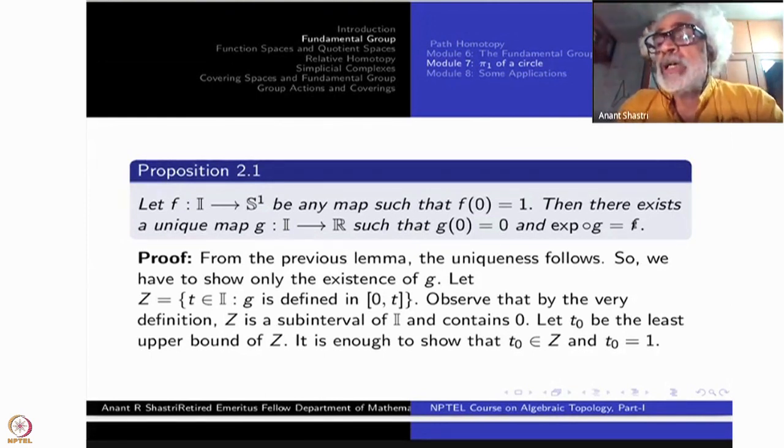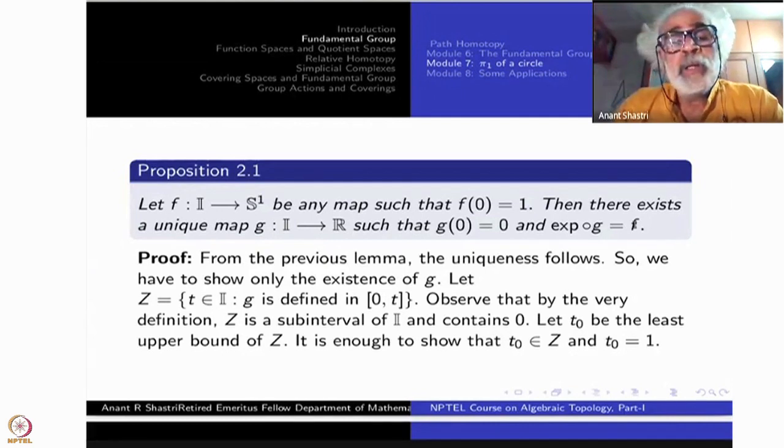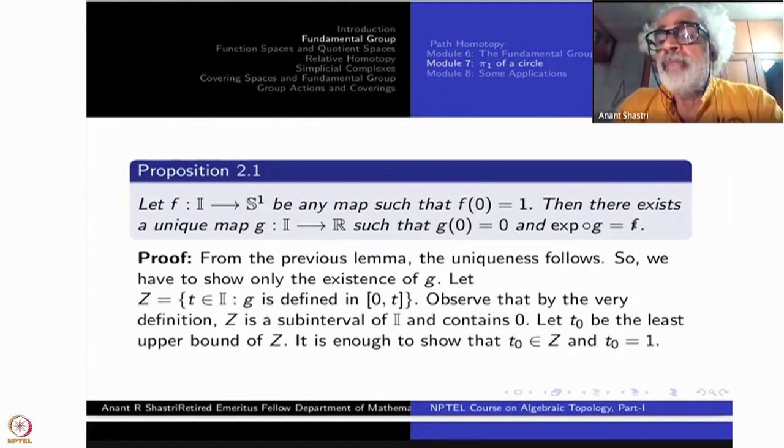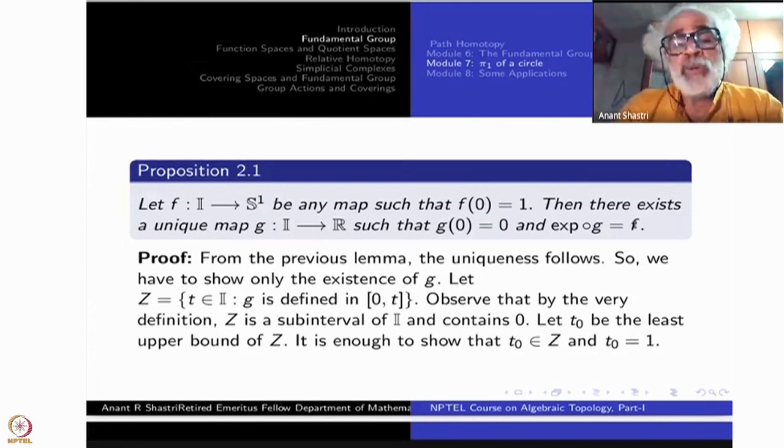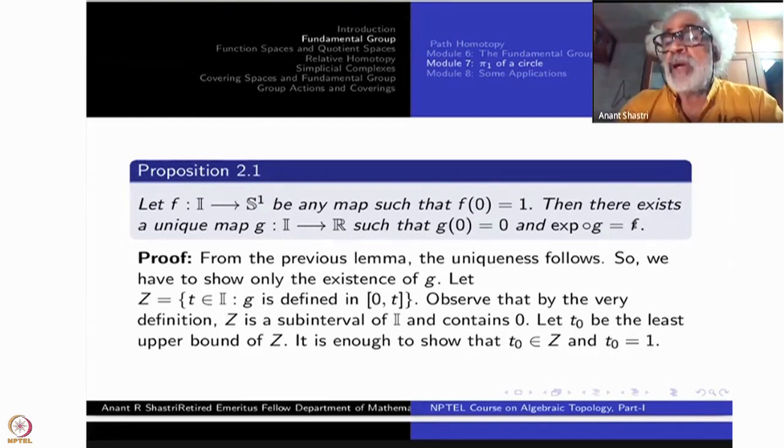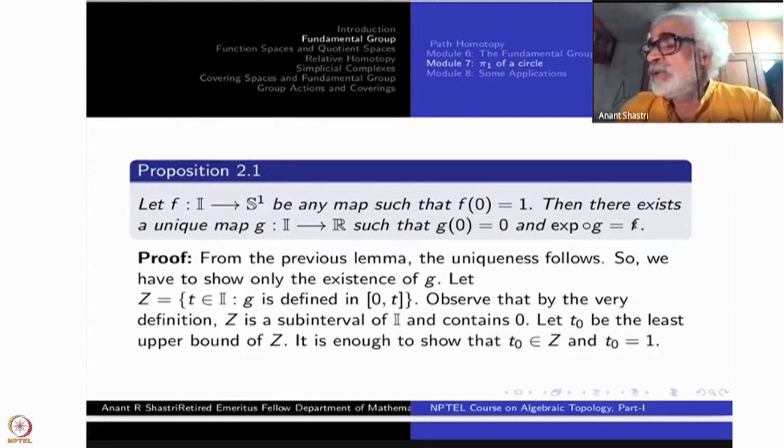Therefore, along with this proposition, it says that any function, any smooth function from I to S¹ can be lifted. And there are so many lifts, namely infinitely many lifts. One at each point, one at each integer. So this will be the meaning of this proposition. So we have to do it only for one, namely G(0) equal to 0. Then we are done. Is that clear?